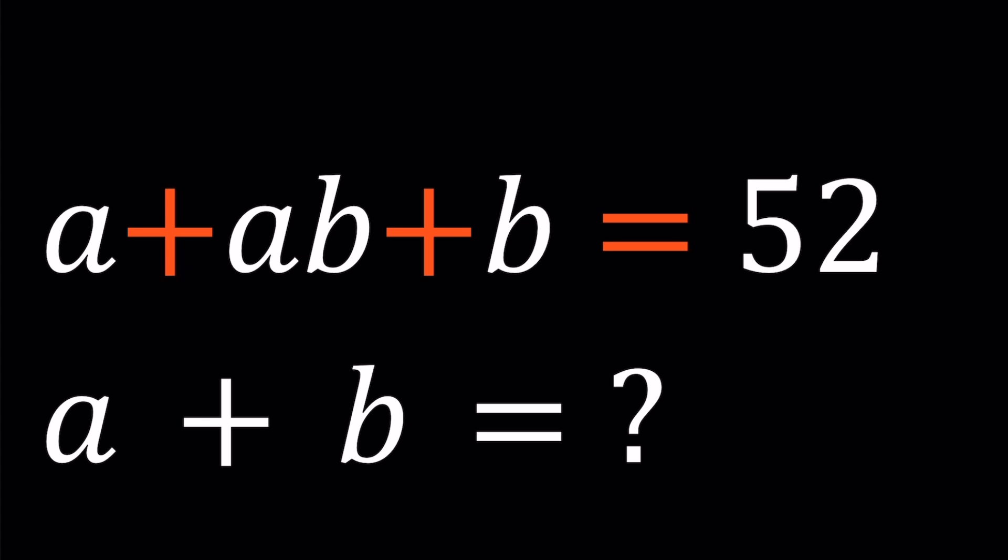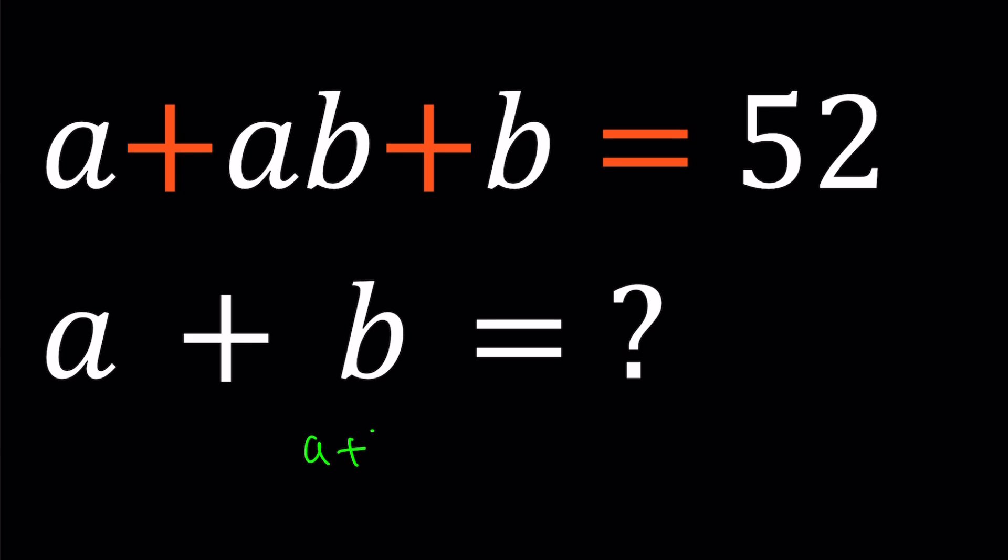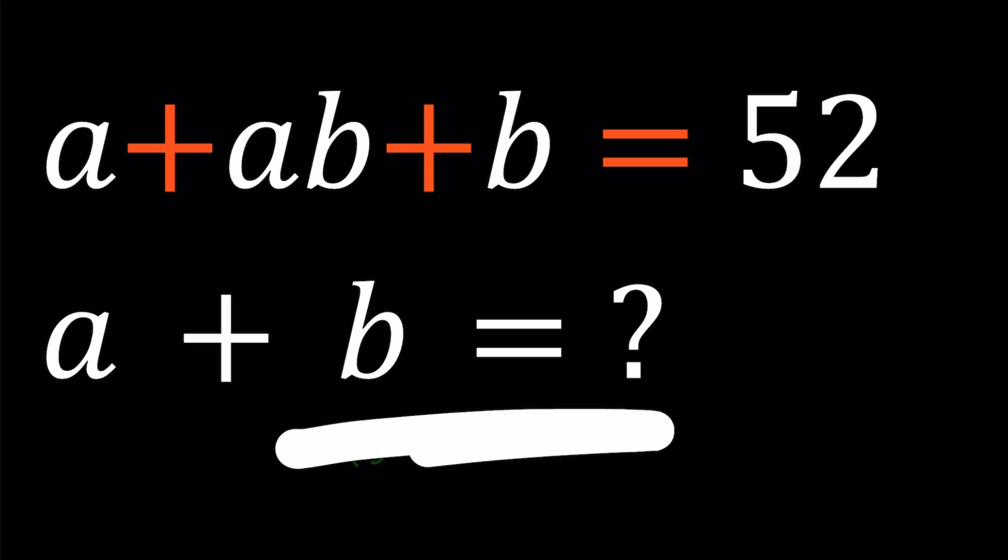I know there's a very cheap solution to this equation, which you can write as a plus b equals 52 minus ab, but that's not what I mean. I do want you to find a numerical answer. Let me make that clear first.